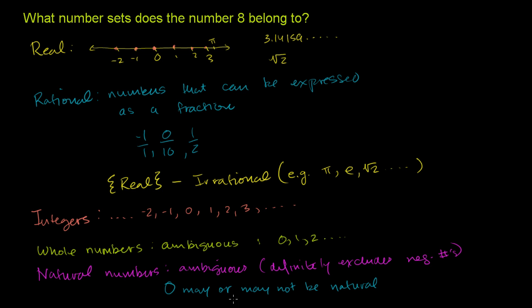Now, let's answer our actual question. What number sets does 8 belong to? Well, 8 definitely belongs to the real numbers. It is on the number line. It is definitely a rational number. We can express it as 8 over 1, or 16 over 2, or even negative 8 over negative 1. You could actually have an infinite number of ways to express it as a fraction. So it's definitely a rational number.